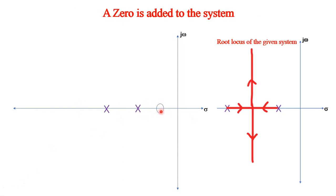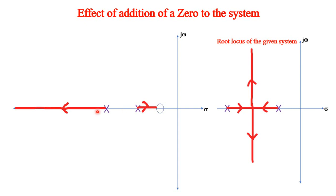Now a zero is added to the right side of the rightmost pole. The root loci go in a certain direction based on rule 3 - odd number of poles and zeros to the right determines the root locus segment. The complex root loci originally had a constant negative real part, but now that value has shifted - it has become less negative. Therefore, the transient response is slightly poor, meaning settling time is slightly higher. Similarly, stability is more closer to the j-omega axis.